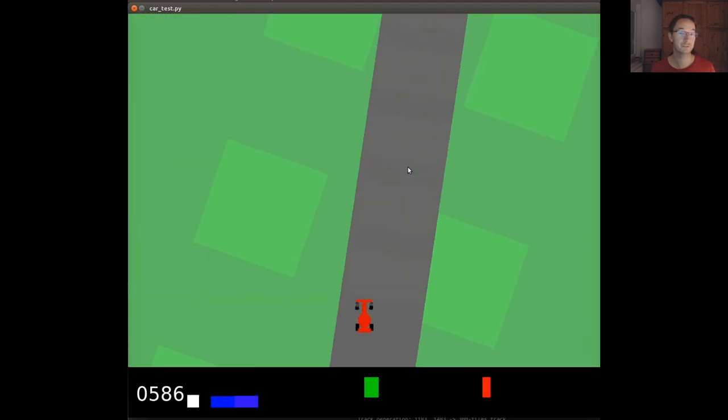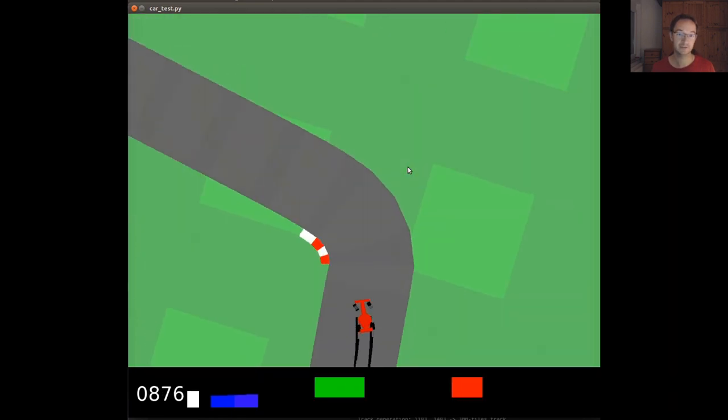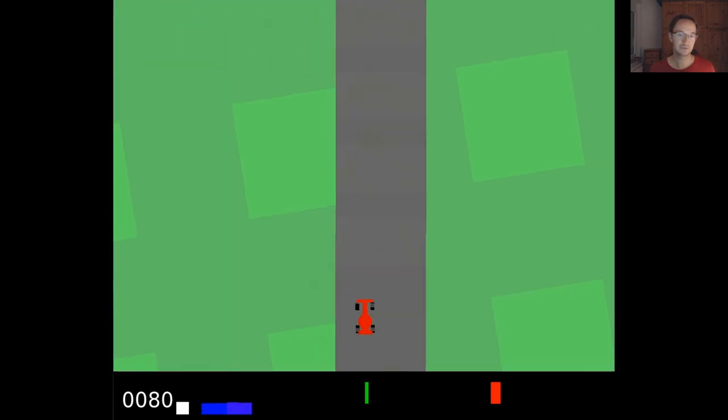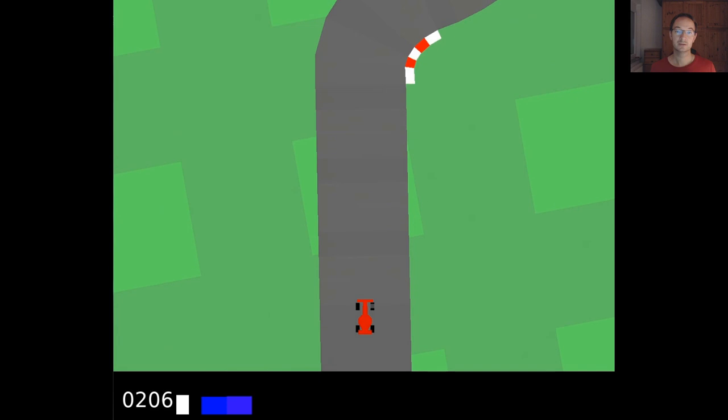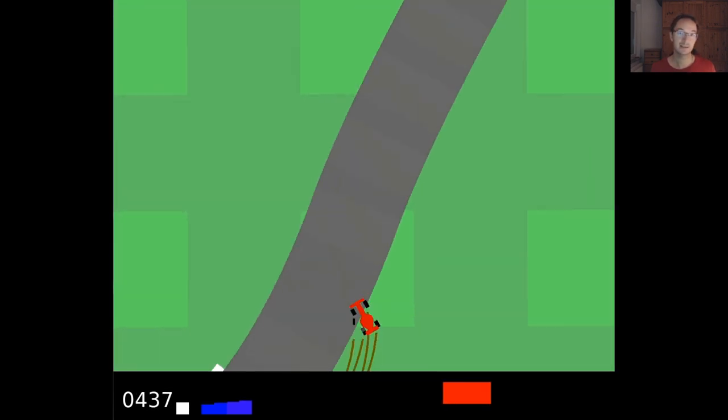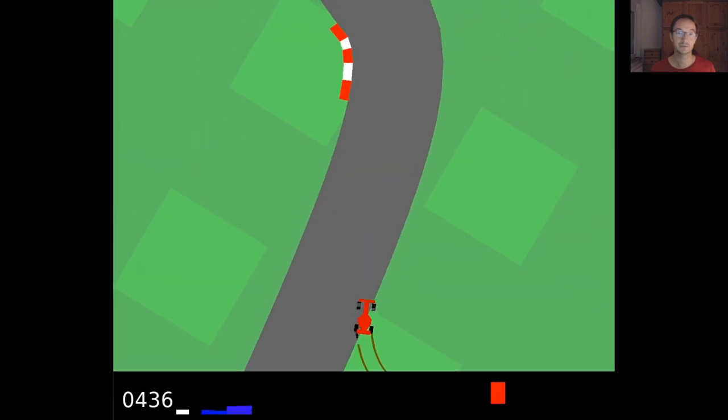Here, there is a human behind the steering wheel, and we're simply recording the images and the actions of the human driver. And then we're using this to train in a supervised learning setting, an imitation learning policy that then tries to replicate the human driving behavior.